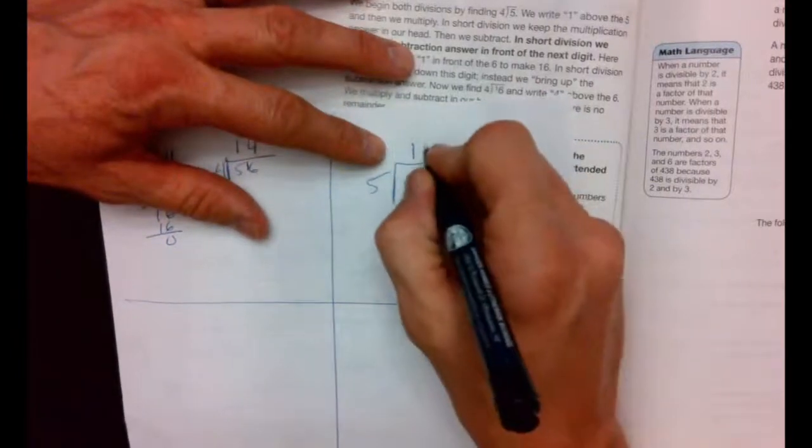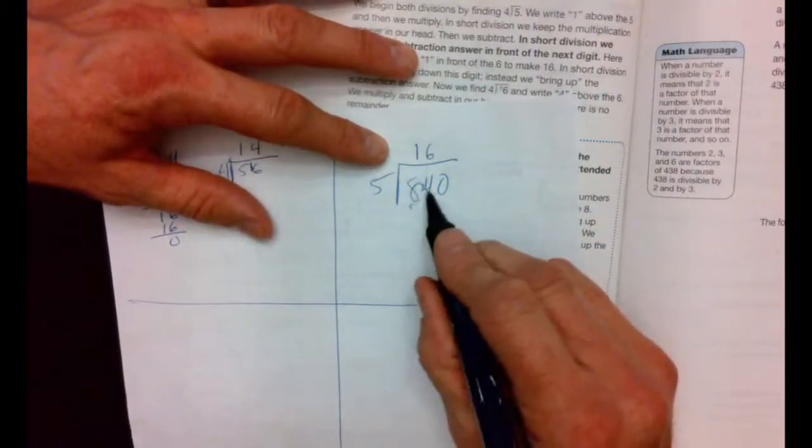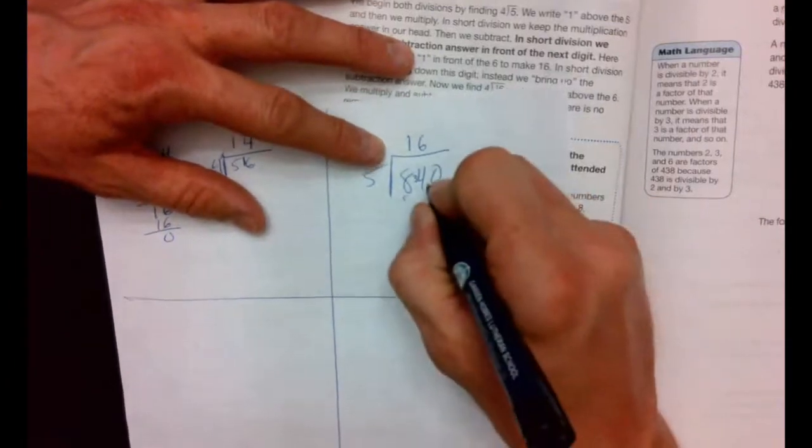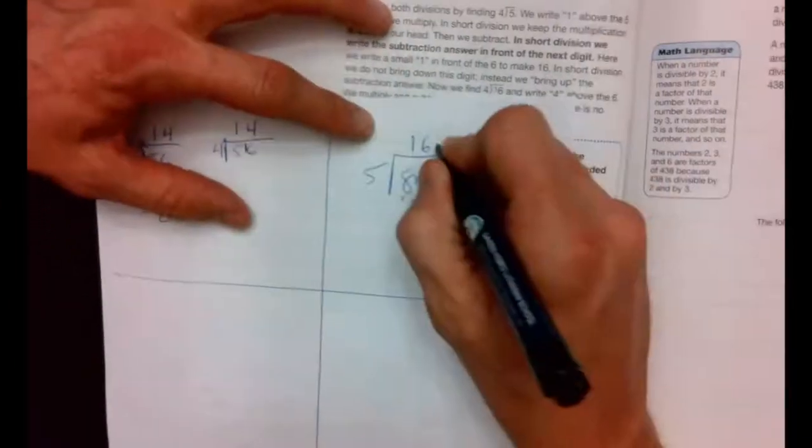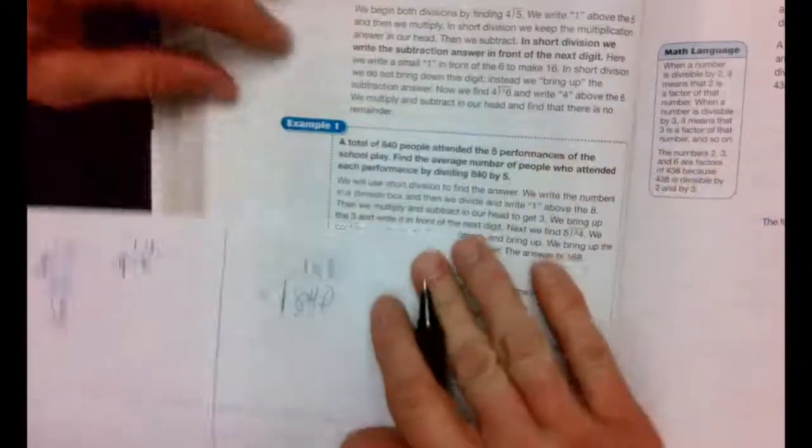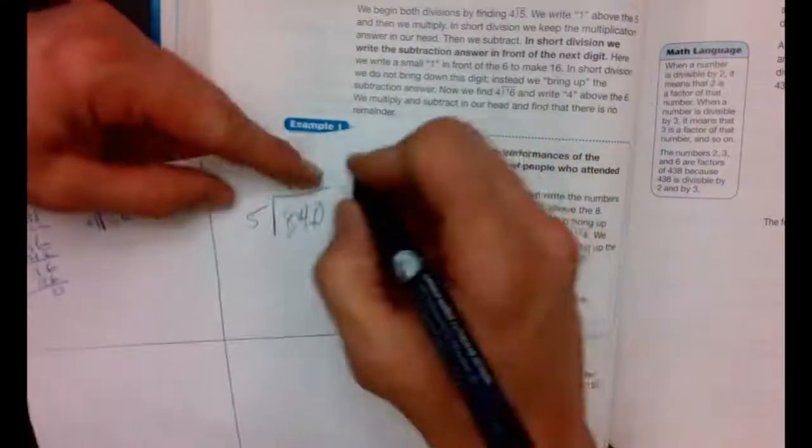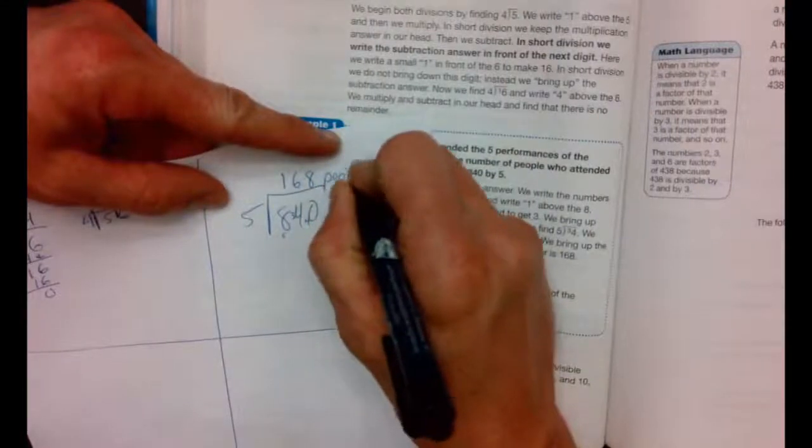How many times 5 go into 34? 6 times. Very good. 6 times 5 is 30. 34 minus 30 is 4. And put the 4 right in front of the 0. How many times 5 go into 40? 8. And now we're finished. All we need is a label. And then it was how many people? So we got 168 people.